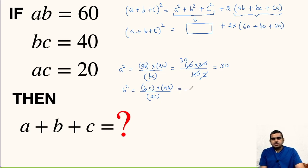What is BC? It is 40. So BC is 40, AB is 60, AC is 20. So this is 2 times, 2 times 60 is 120.